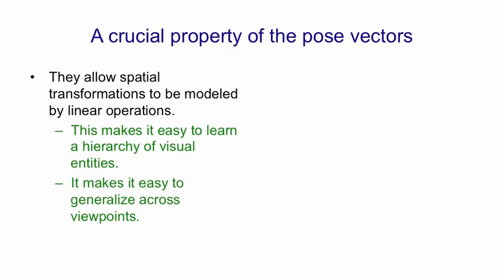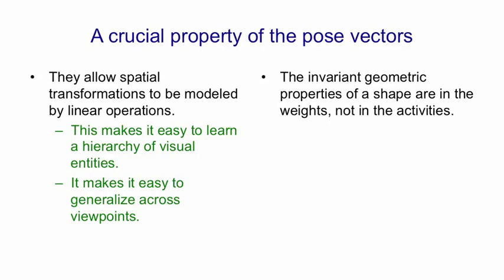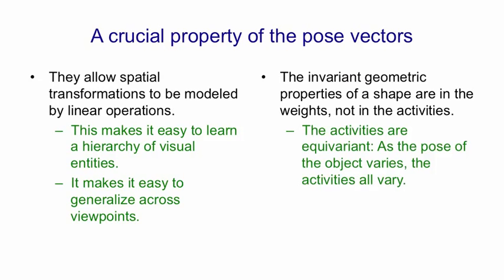It also makes it very easy to generalize across viewpoints. What's going to happen when we make small changes in viewpoint is that the pose vectors — those vectors of neural activities — are all going to change. What's going to be invariant is the weights. It was the weights that represented the relationship between a part and a whole, like Tij on the previous slide, and those don't depend on viewpoint. So we want to get the invariant properties of a shape into the weights and have the pose vectors in the activities. Rather than trying to get neural activities that are invariant to viewpoint, which is what pooling in a convolutional net is trying to do, we're going to aim to get neural activities that are equivariant to viewpoint. As the pose of the object varies, the activities of the neurons vary.